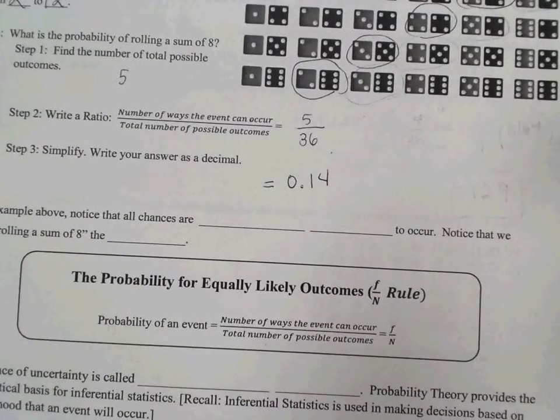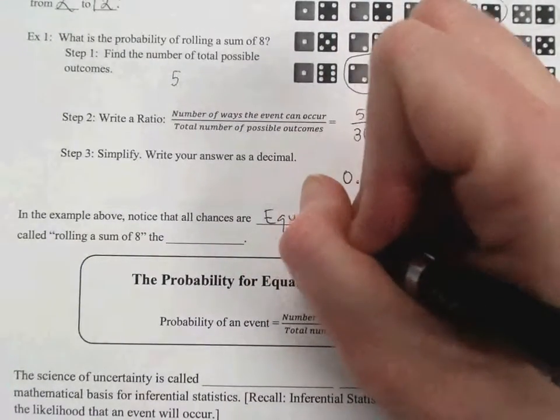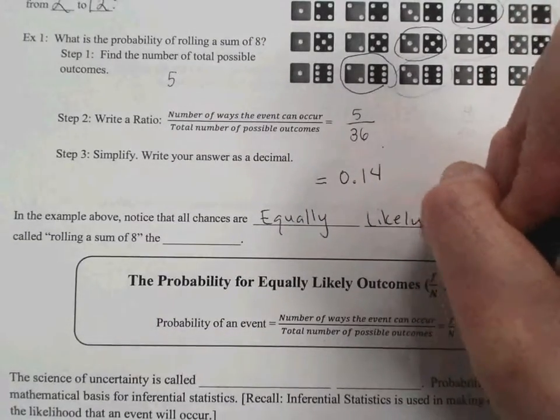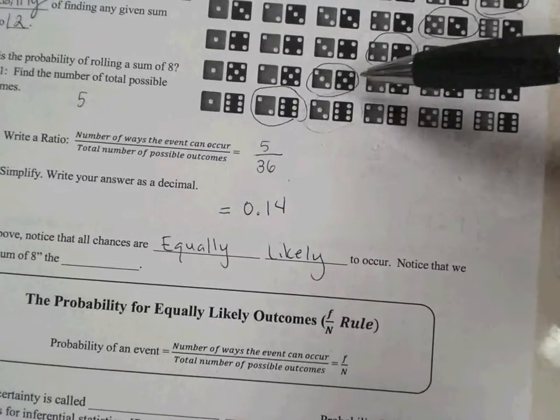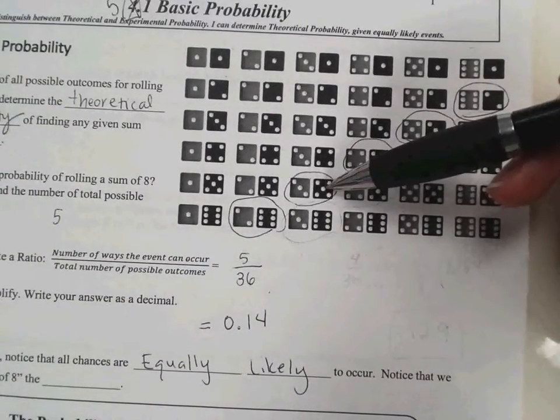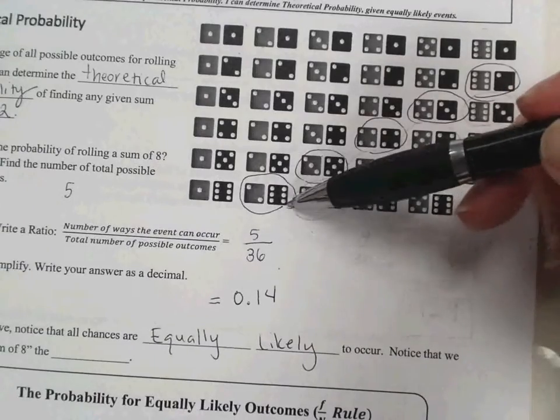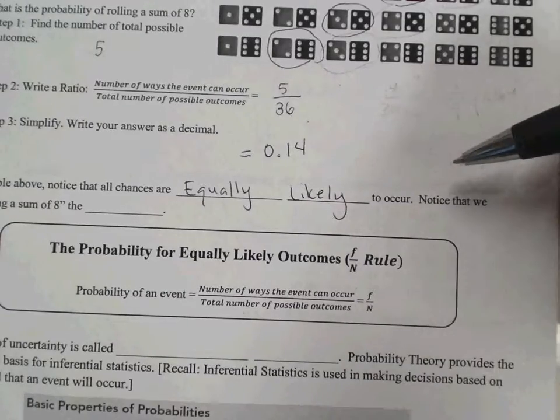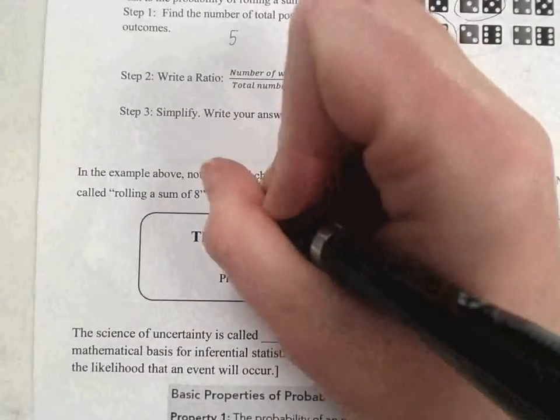In the example above, notice that all chances are equally likely. It's equally likely that we would roll a 3 and a 5 as it would be to roll a 2 and a 6. That's what I mean by equally likely. And notice that we called rolling a sum of 8 the event.